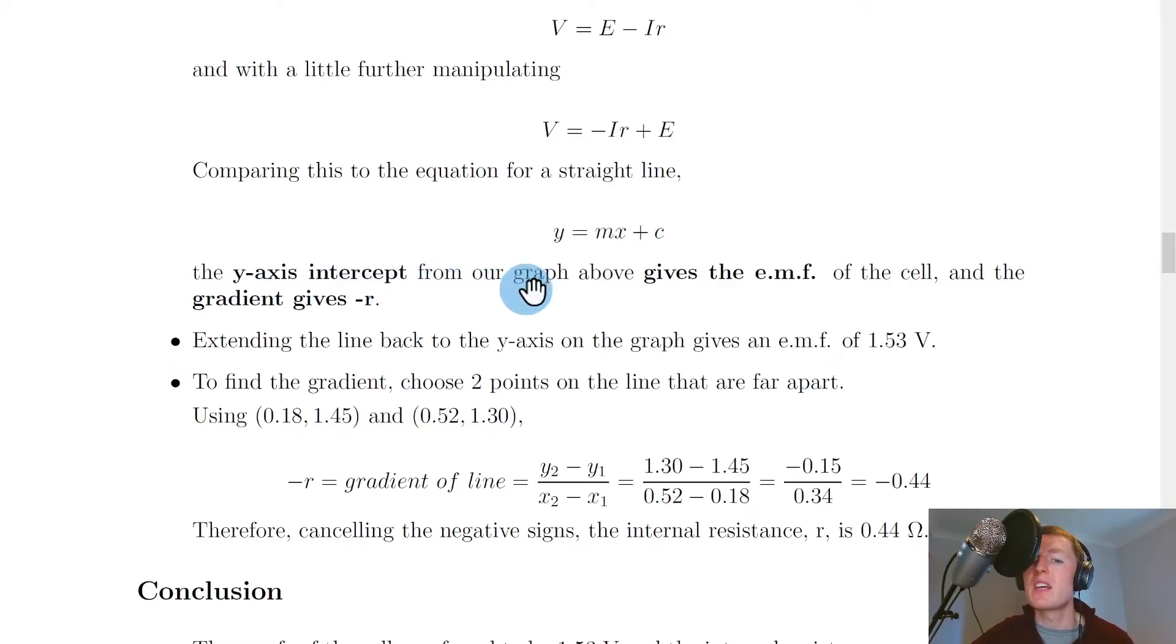So it says the y-axis intercept from our graph above gives the emf of the cell and the gradient gives minus r. So once we've said that the current i is the x-axis we're left with minus r here and that means that the gradient m gives the negative of the internal resistance.